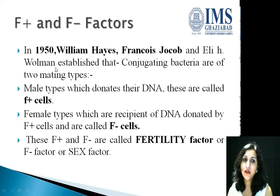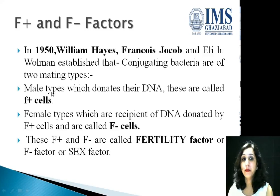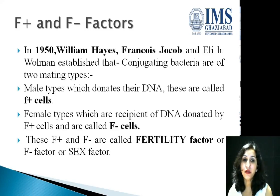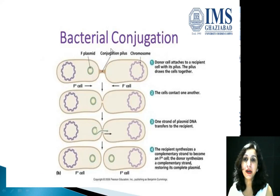For conjugation, physical contact between two strains of E. coli is required. We should also know what F-plus and F-minus factors are. As described by William Hayes, Francis Jacob, and Elie Wollman, conjugating bacteria are of two mating types: male cells that donate their DNA are called F-plus cells, and those cells lacking DNA to donate — the receiving or female types — are called F-minus cells. These F-plus and F-minus factors are called the fertility factor or sex factor.